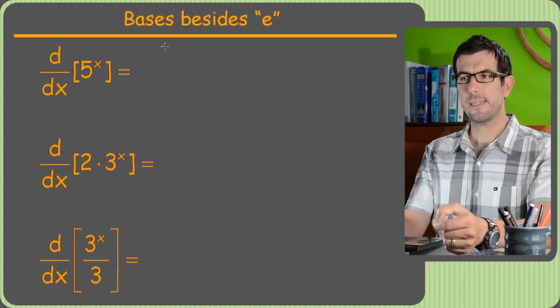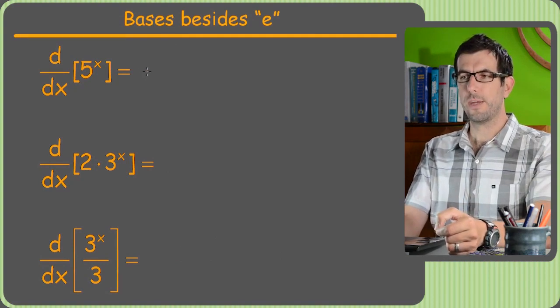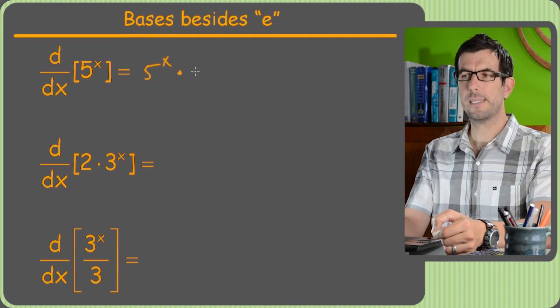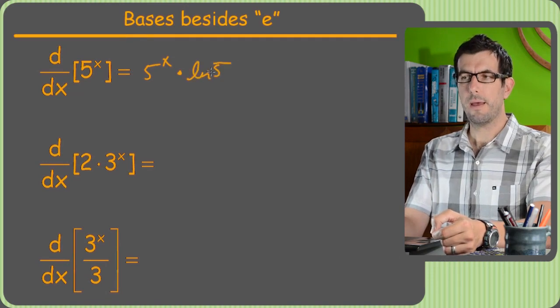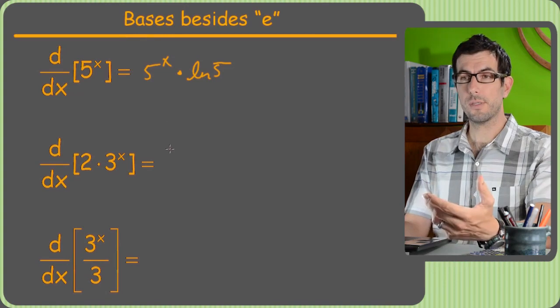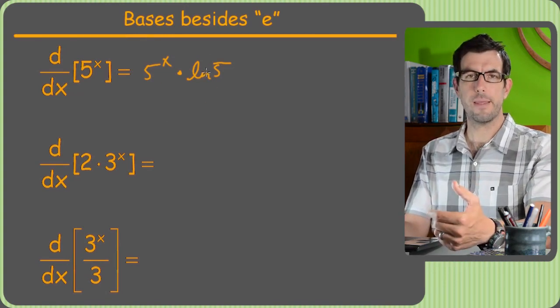Alright, so then the basis besides e, slightly more difficult. You're going to do 5 to the x, just like you would for e, then you're going to multiply times the ln of the base. So not too bad. If you're doing integrals, you'd end up dividing by the ln of the base.